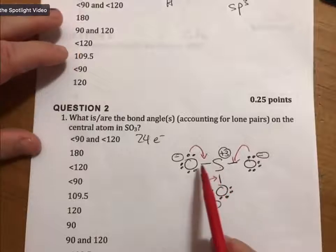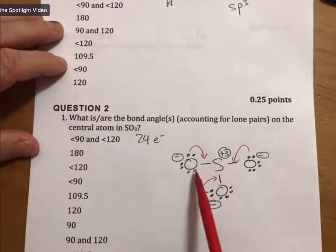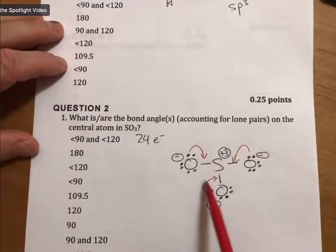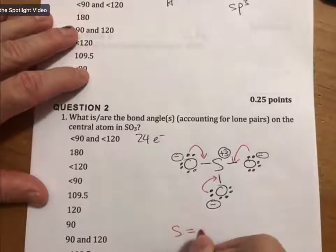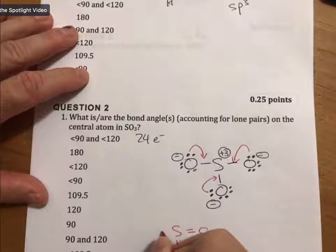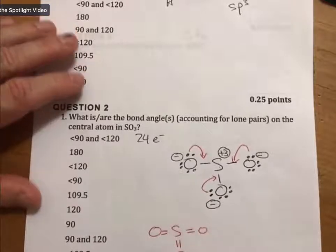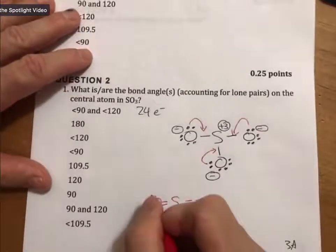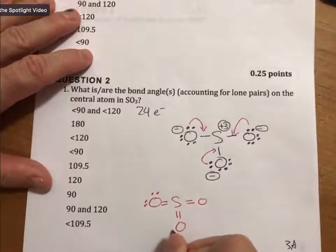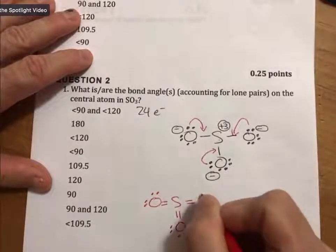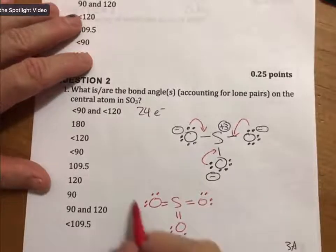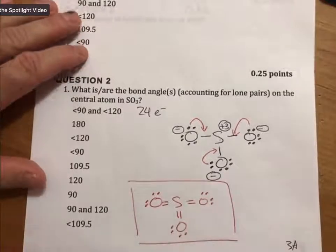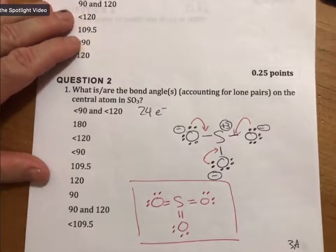We were just back at SO3. We've just formed three double bonds, and then since this is a Lewis structure, draw all the pairs of electrons. Right here is your best Lewis structure for this molecule.